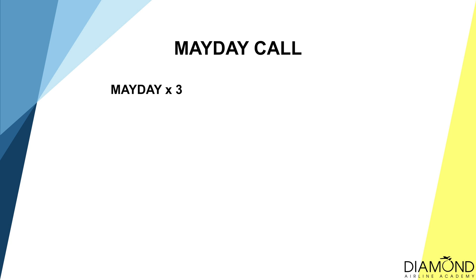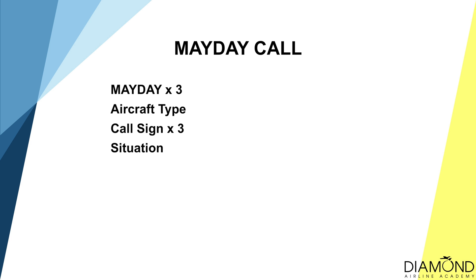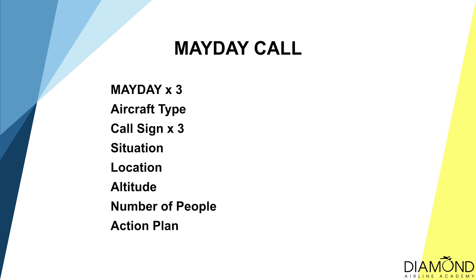The next phase of forced landing would be communication. We'll be making a mayday call to air traffic control to request assistance and also set the transponder. A standard mayday call consists of: mayday, the aircraft type, the call sign, the nature of the emergency, the current location and altitude, the number of people on board, and the planned action.